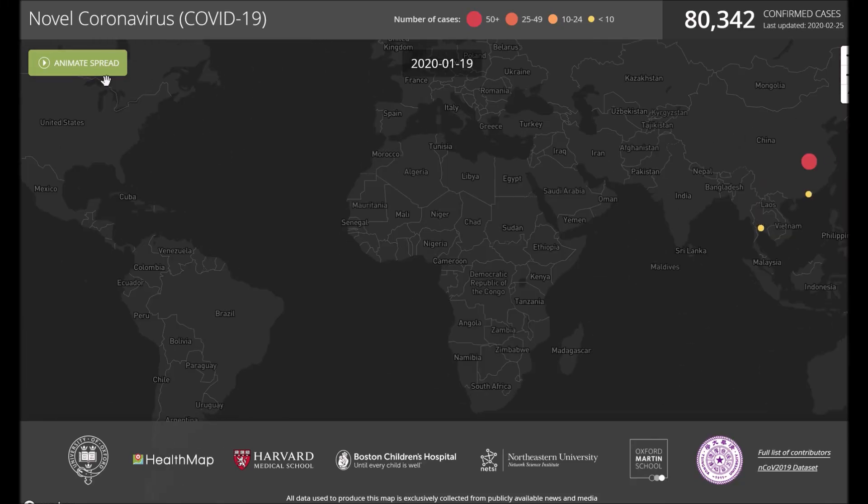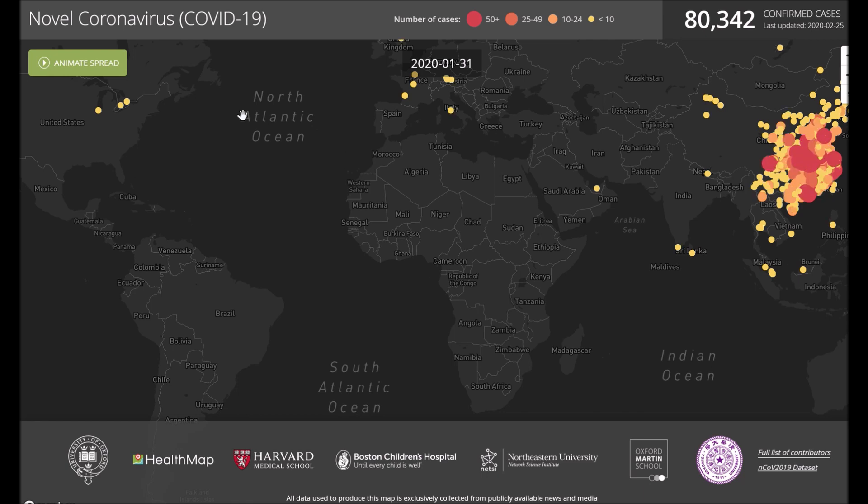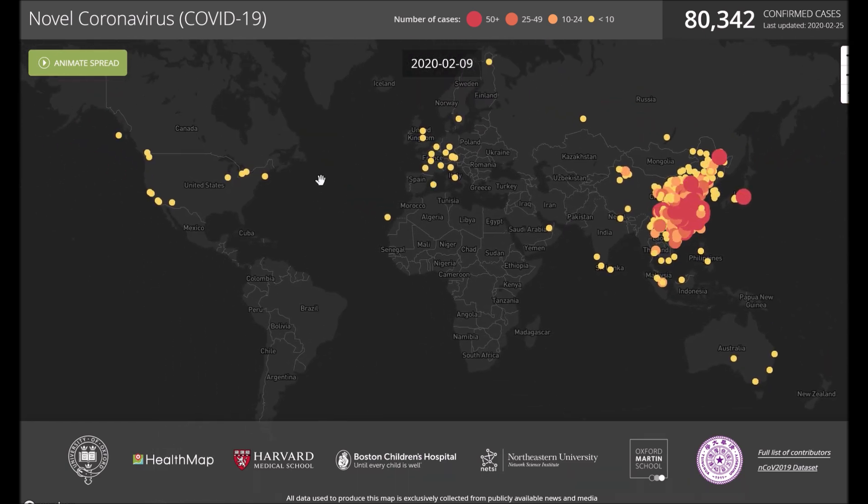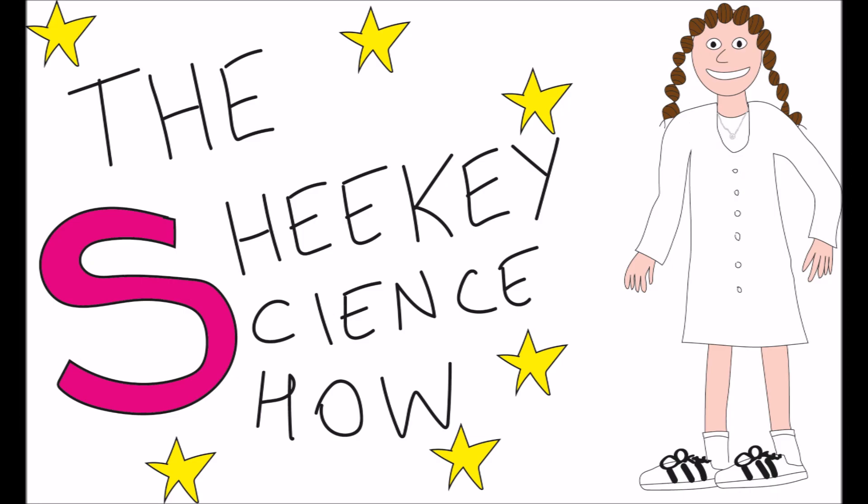There are now more than 80,000 confirmed cases of the novel coronavirus outbreak. What started in Wuhan, China has now spread across the globe. But what do we actually know about the coronavirus outbreak and what are we still yet to learn about it?